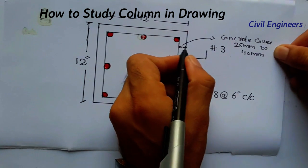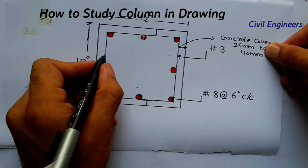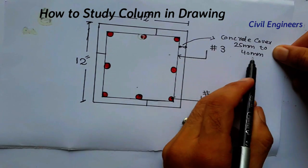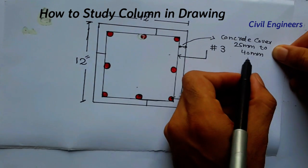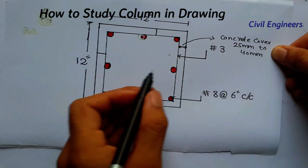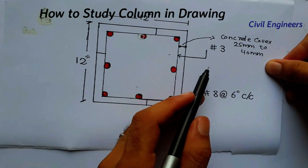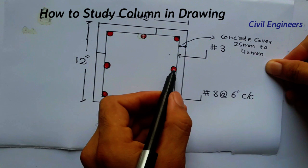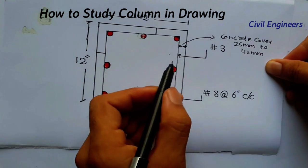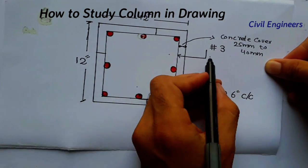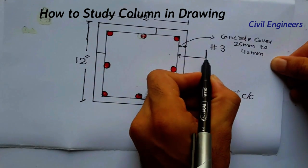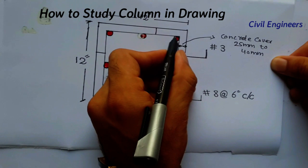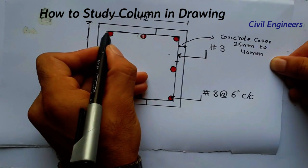Now here we have 1, 2, 3, 4, 5, 6, 7, 8 — so there are 8 numbers of bars in this column. We can also call them 8 numbers of steel. Here we have this mark, and this is called a stirrup for this column.